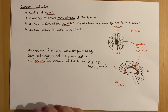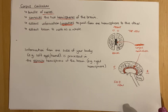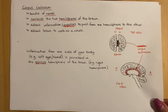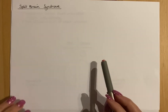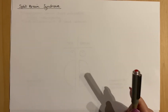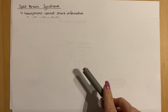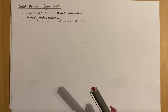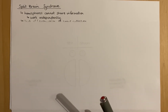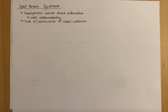The same applies to control — the left hemisphere of your brain will control your right hand. Split brain syndrome basically means the hemispheres of your brain cannot share information; they work independently. This happens either because you're born without a corpus callosum, or it has been destroyed. Some people with severe epilepsy get their corpus callosum cut so that impulses won't pass across the brain.